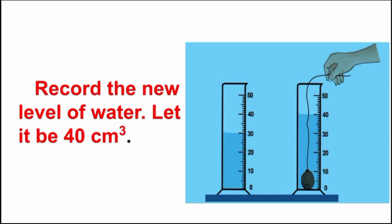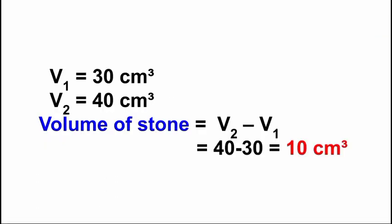Now tie the given stone to a fine thread and lower it gently into the measuring cylinder so that it is completely immersed in water. Record the new level of water — let it be V2 = 40 centimeter cube. The volume of the stone = V2 − V1 = 40 − 30 = 10 centimeter cube.